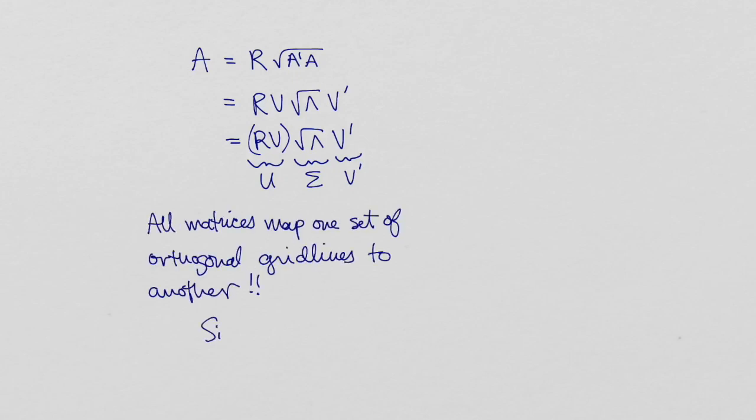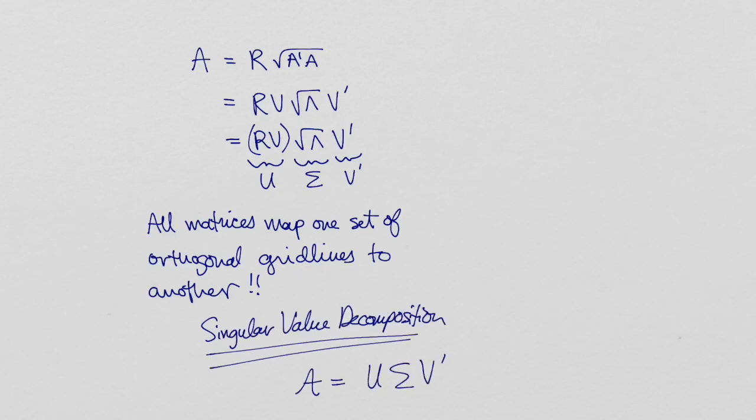This is called the singular value decomposition. Graphically, we can think of the SVD as mapping the domain of A to the co-domain of A one map at a time.